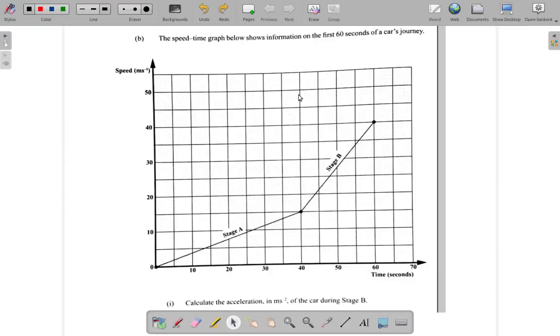Let's look at part B1. The speed-time graph below shows information on the first 60 seconds of a car's journey.